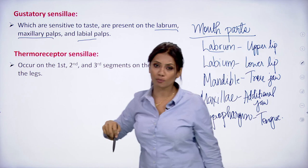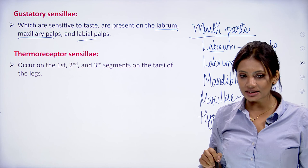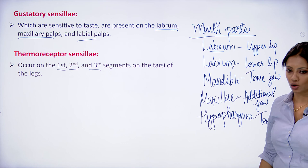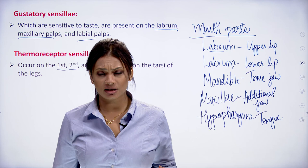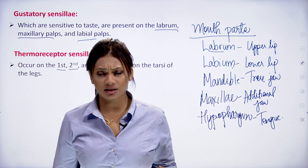Thermoreceptor sensillae for temperature are present on the first, second, and third segments of the tarsus of the legs. This completes the sense organs of the cockroach. The next lecture will cover the reproductive system of the male and female parts of the cockroach.